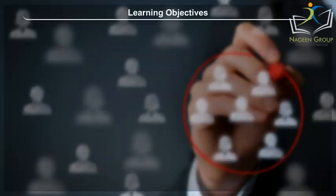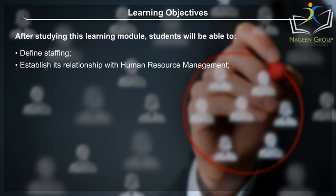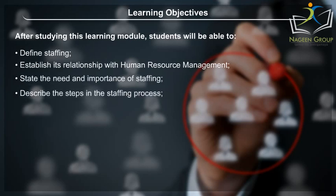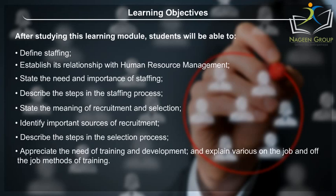Learning Objectives: After studying this learning module, students will be able to define staffing, establish its relationship with human resource management, state the need and importance of staffing, describe the steps in the staffing process, state the meaning of recruitment and selection, identify important sources of recruitment, describe the steps in the selection process, appreciate the need of training and development, and explain various on-the-job and off-the-job methods of training.